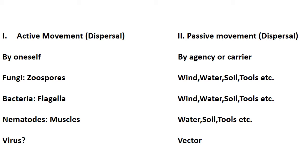Passive movement is with the help of an agency or a carrier. In the case of fungi, the agency is wind, water, soil, or tools, while in the case of bacteria the agencies are again wind, water, soil, and tools. Nematodes, because they live inside the soil, are usually not dispersed by wind, but they can still move from infected to healthy plants with the help of water, soil, and tools. Most viruses move from infected to healthy plants with the help of a vector, and usually this vector is an insect.